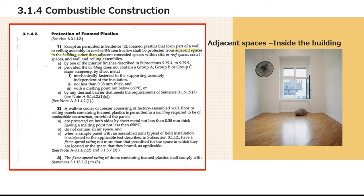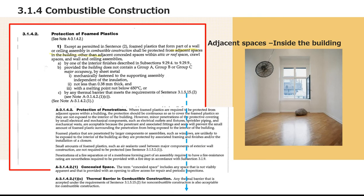We'll dive right into the combustible construction section. You'll find section 3142, protection of foam plastics. When you look at this section, you might immediately think it applies to all foam plastics, but that's not the case — this is for adjacent spaces within the building, not outside. Any thermal barrier must meet section 31515. The appendix confirms it applies to adjacent spaces within the building, which further cements that it applies inside the building.